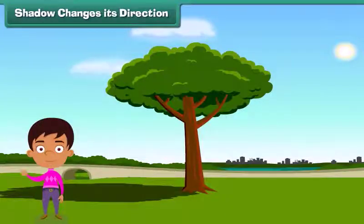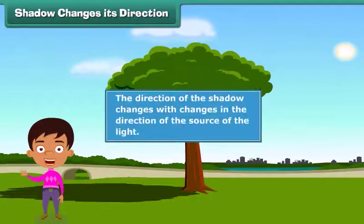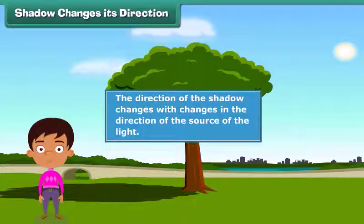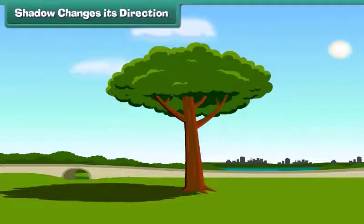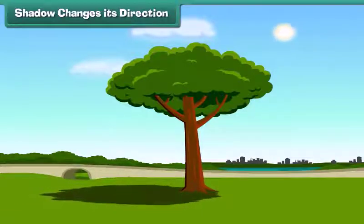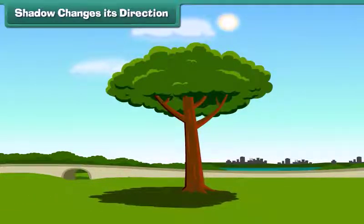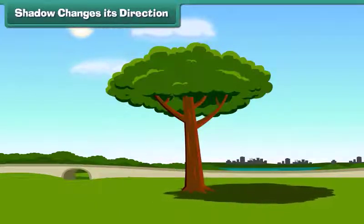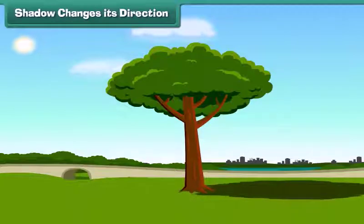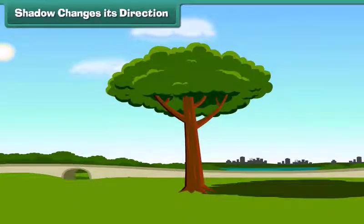You'll be surprised to know that the direction of the shadow changes with the changes in the direction of the source of light. For example, the shadow of these trees changes as the sun moves from east to west during the day. During the day, sometimes it becomes long and sometimes short. Let's see how this happens.